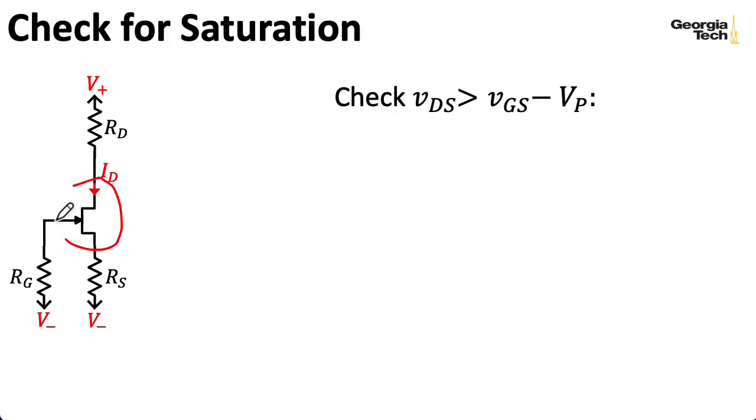Now, you may want to double check that this JFET is in saturation. Namely, the drain-to-source voltage is bigger than the gate-to-source voltage minus the pinch-off voltage. Remember the gate-to-source voltage itself is negative, and the pinch-off voltage is negative, so this minus VP is positive. It can be a little confusing when dealing with JFETs and depletion-mode MOSFETs. We can use this expression for the gate-to-source voltage in terms of the drain current that we compute and plug that in here.